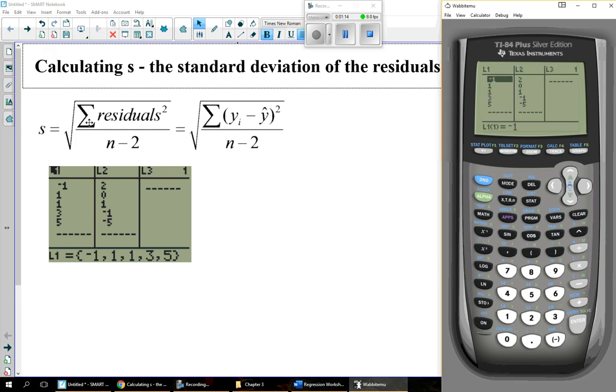So one way to do this quickly with this formula is to take the residuals themselves and put them in L3. The calculator calculated and stored the residuals in a list for you. So highlight L3, press second list,